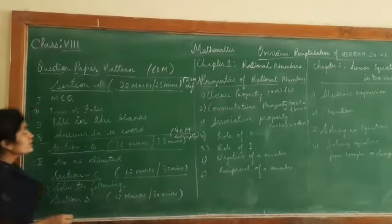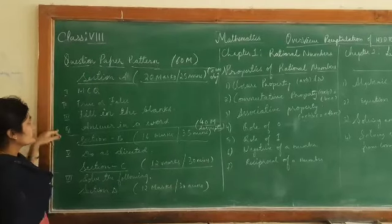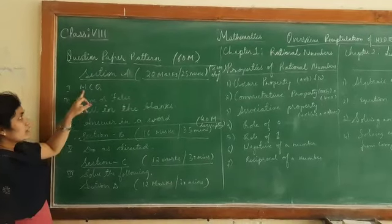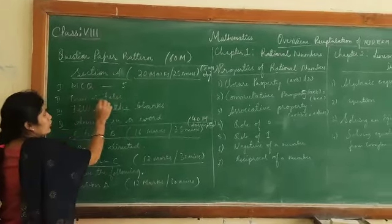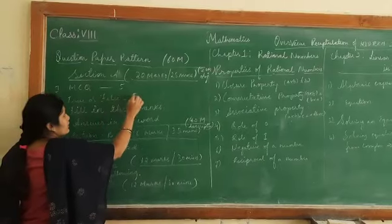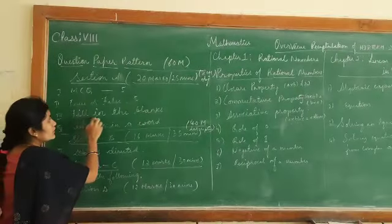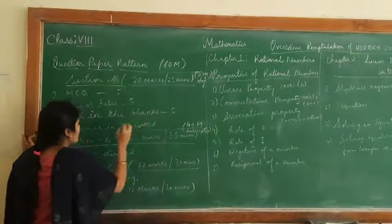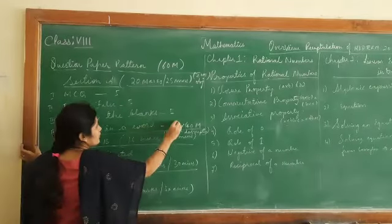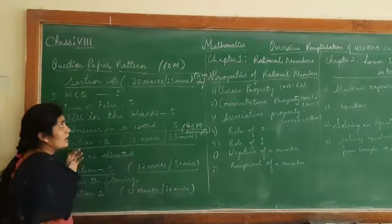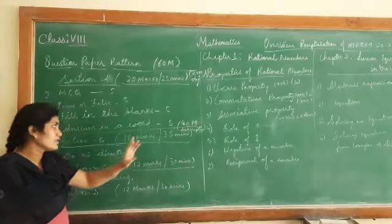In section A, out of 20 marks, we have 4 bits: first MCQs, then 5 true or false, third fill in the blanks for 5 marks, and answer in one word for 5 marks. You should try to answer this section in 25 minutes.